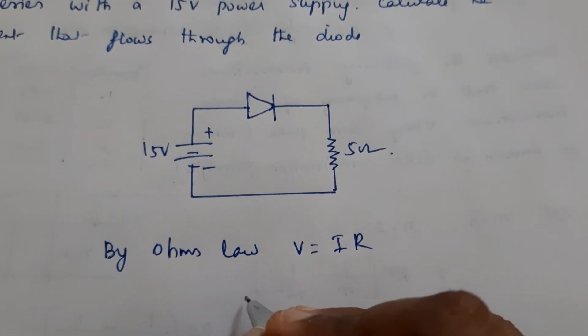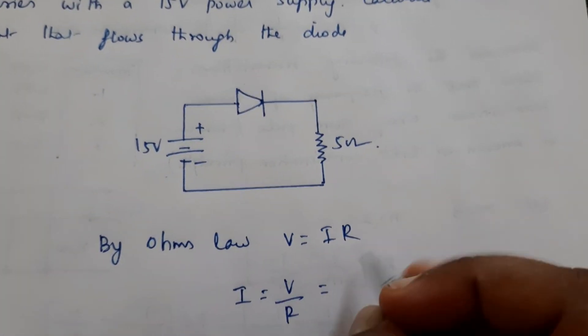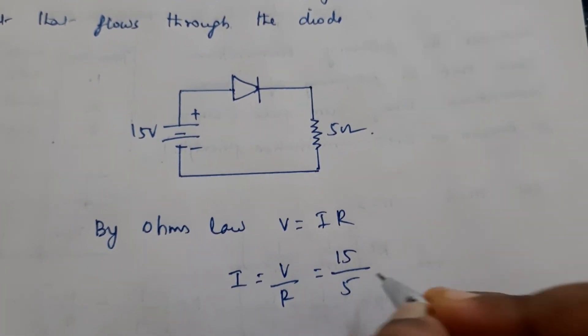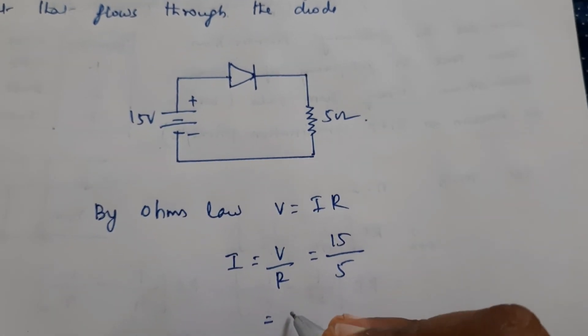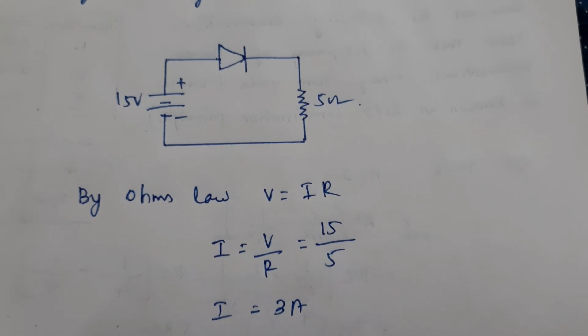We want to find out I. I is equal to V by R. So what is the voltage? This is 15. 15 by 5. So 15 by 5 is 3. The current flowing is 3 ampere.